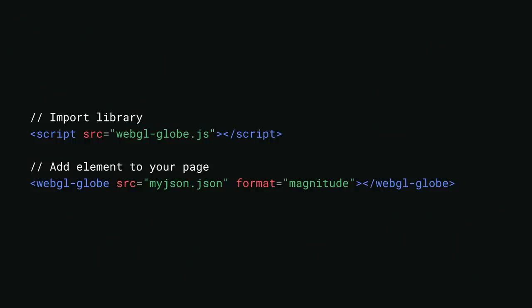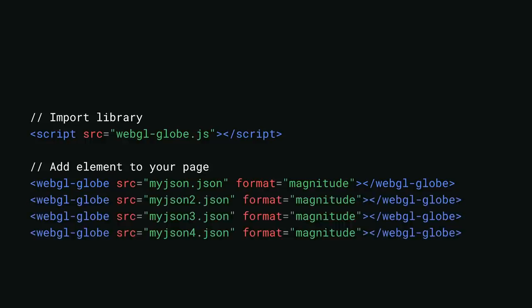Today, with Web Components, we can simplify all that code to just two lines. The developer only has to include the JavaScript library on their website, and a powerful custom element is available to place wherever they need in the DOM. And by simply duplicating that line, they can have multiple globes — whereas before they'd have to duplicate all the code, making it harder to read and maintain.